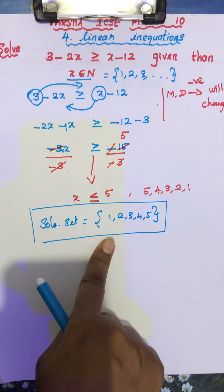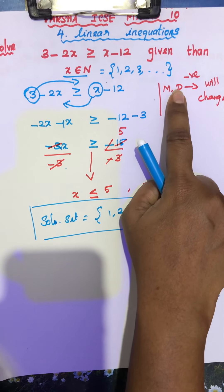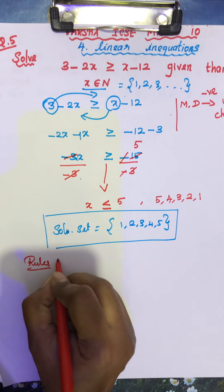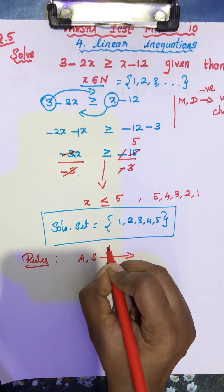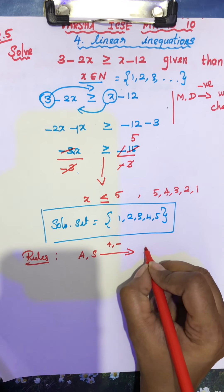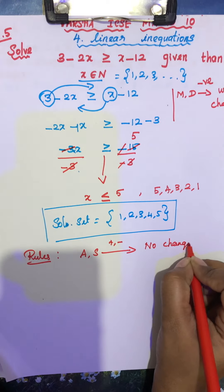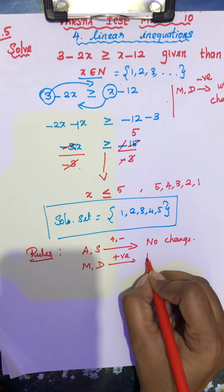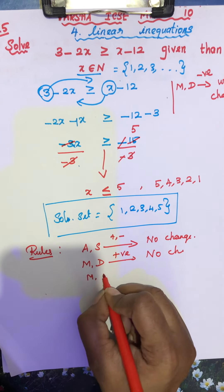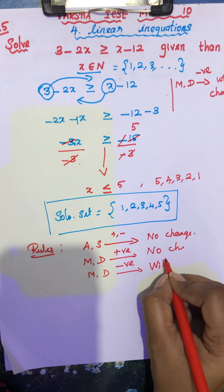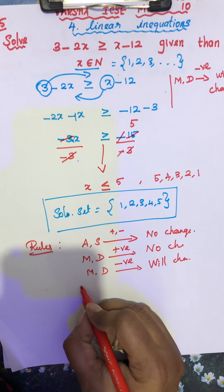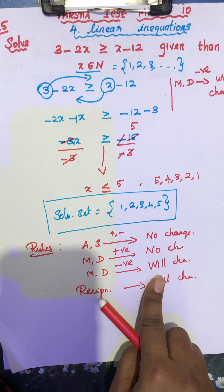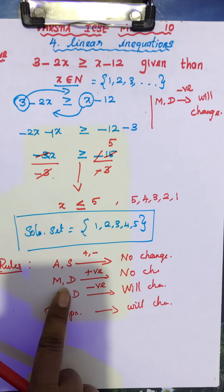Do you understand this question? You have to know the rules well. If you know the rules well, you can do the sum easily. Let me remind the rules. For addition and subtraction, for any number — positive or negative — the inequality will not change. For multiplication and division, if it is a positive number, no change. But for multiplication and division, if it is a negative number, the inequality will change. And for reciprocal also, the inequality sign will change. This is very important to note.